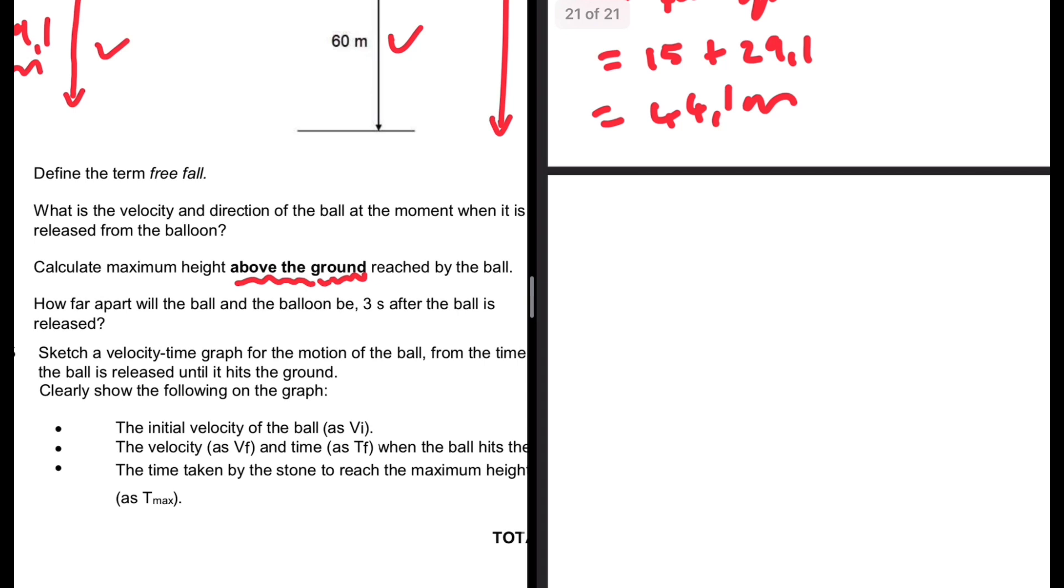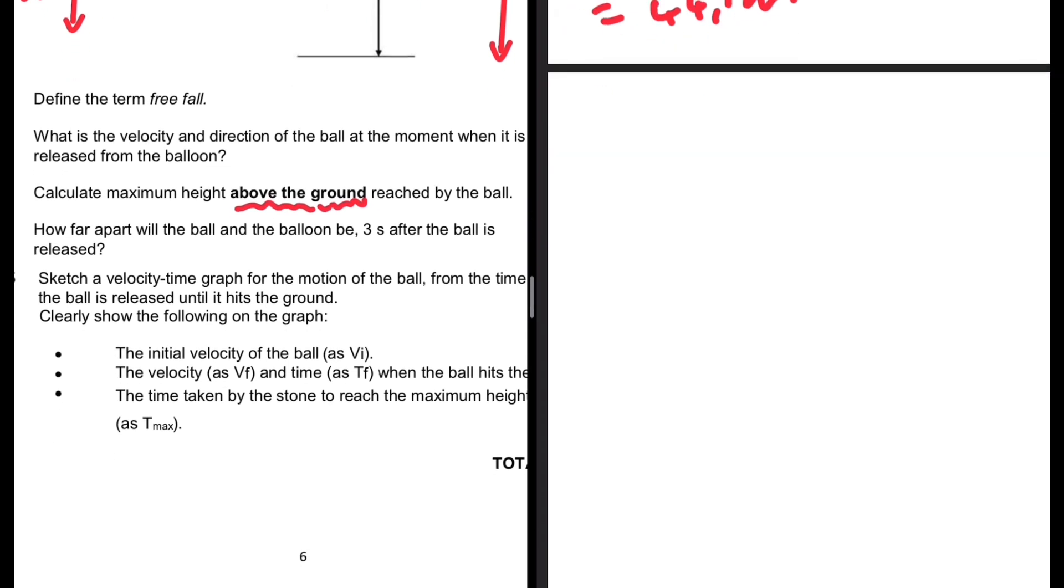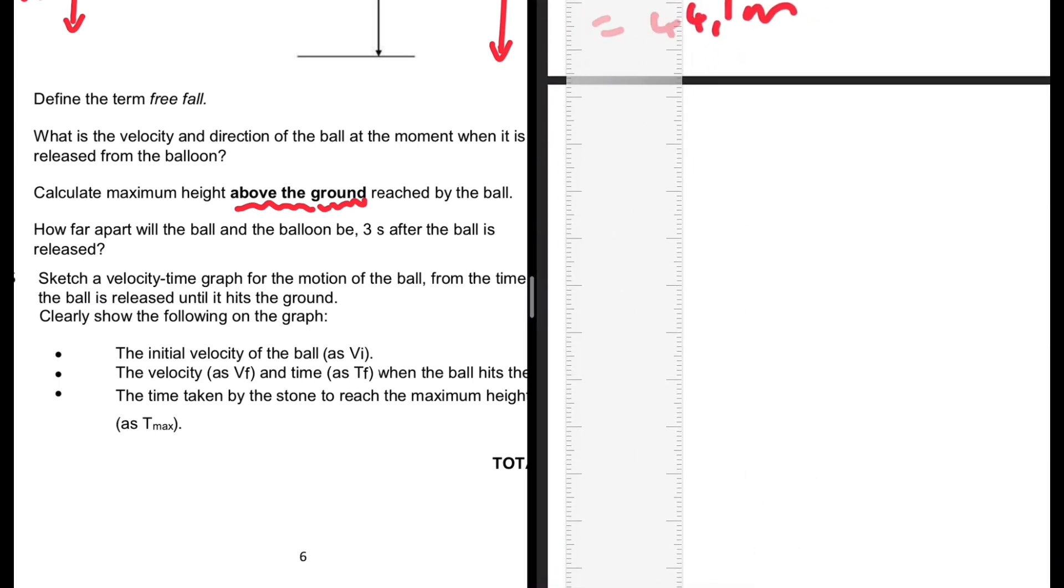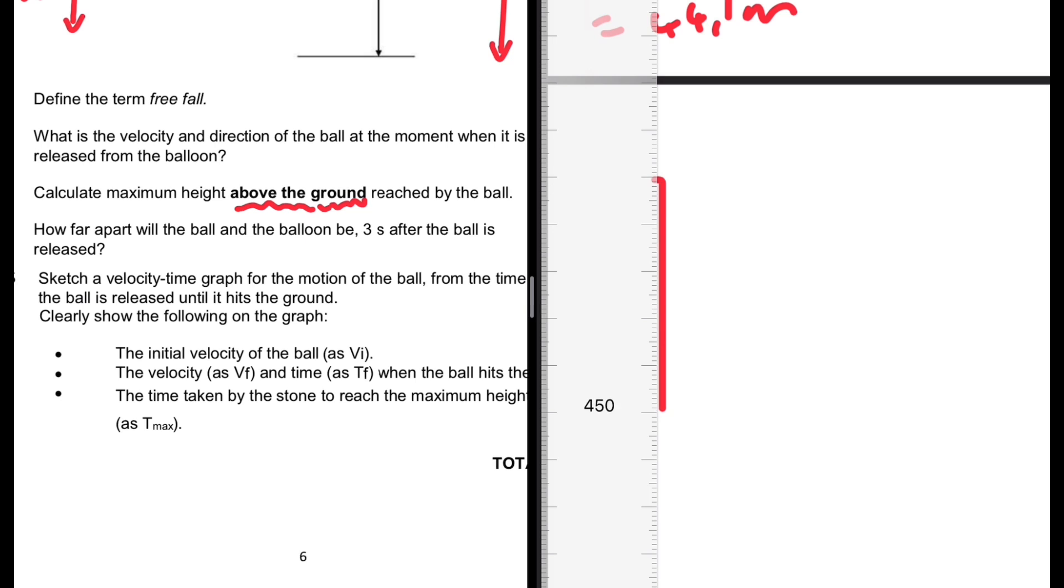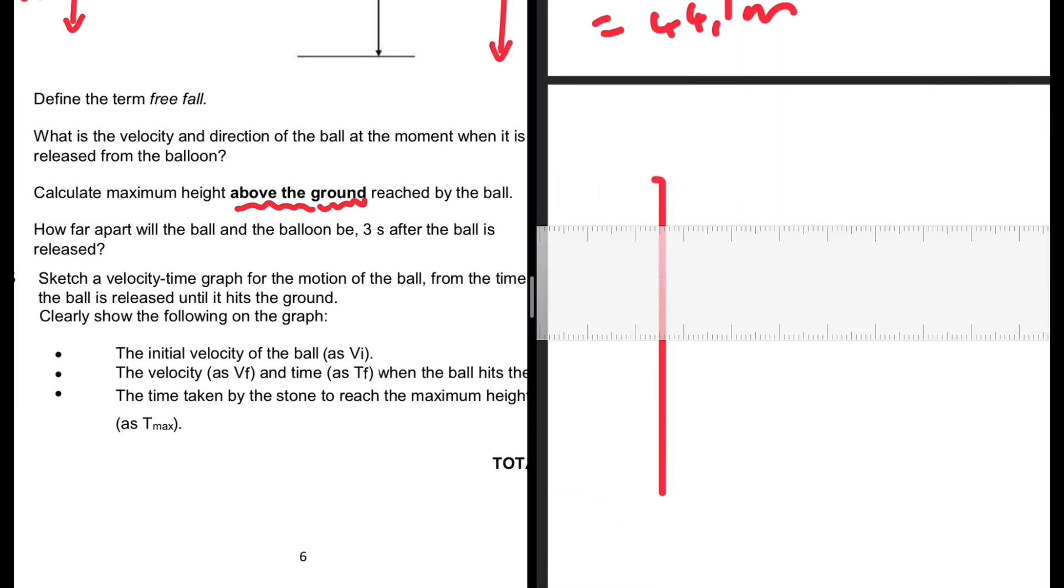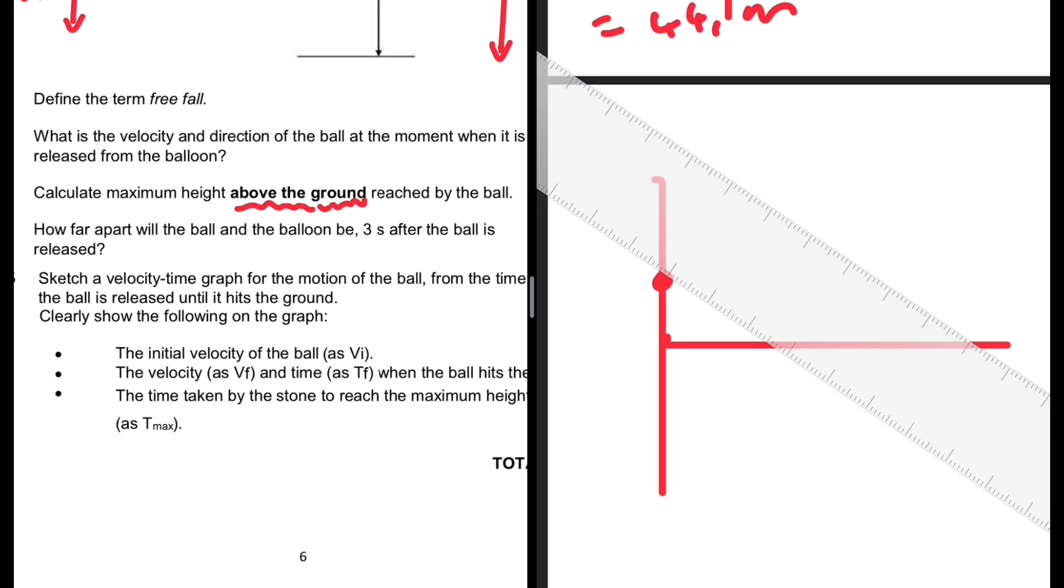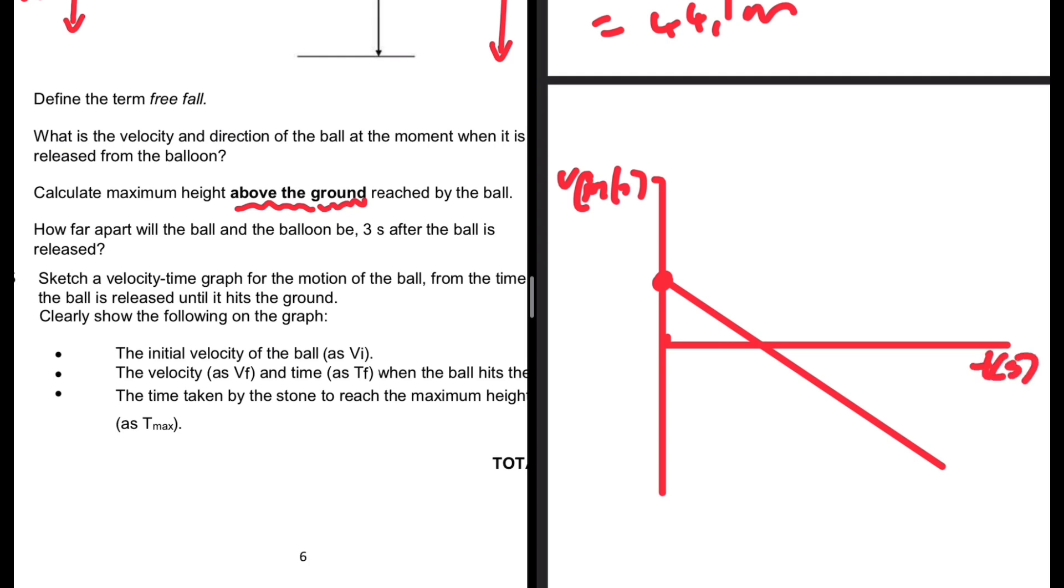We're supposed to sketch a velocity-time graph for the motion of the ball and indicate the initial velocity as vi, not put the actual value. It starts somewhere there, goes to reach maximum height, then strikes the ground. First, label v in meters per second. This is vi, the velocity as vf, and time as tf when the ball strikes the ground.